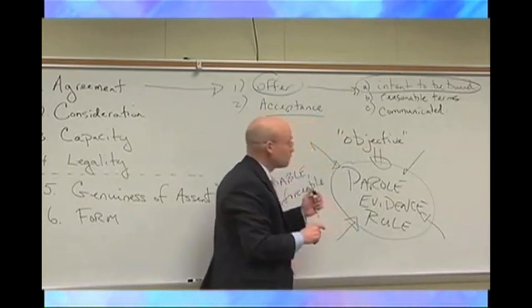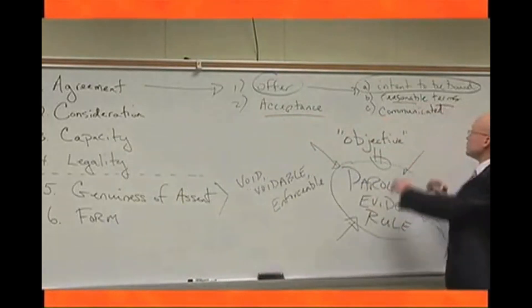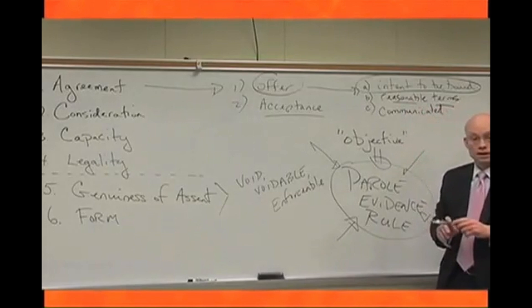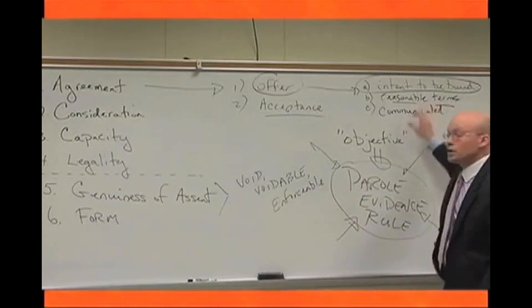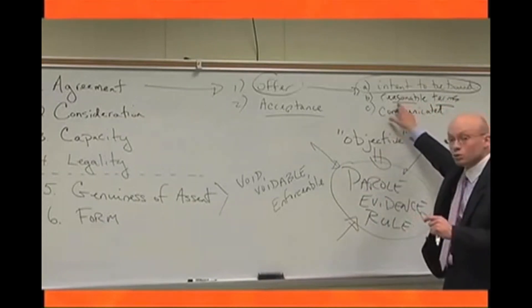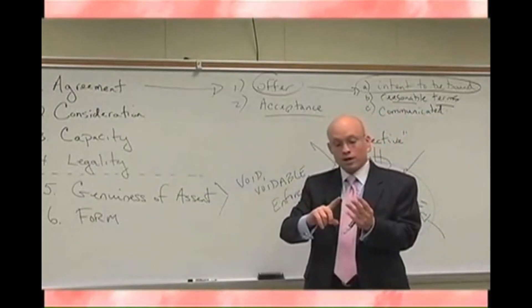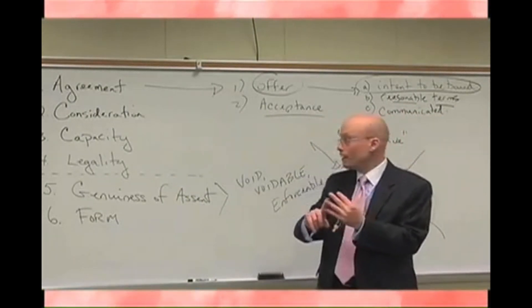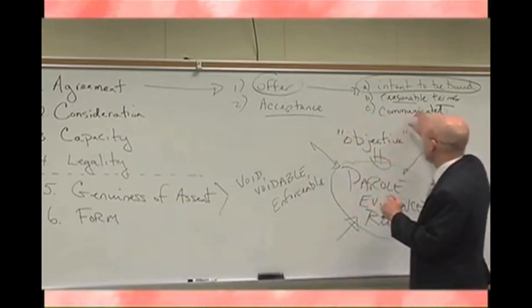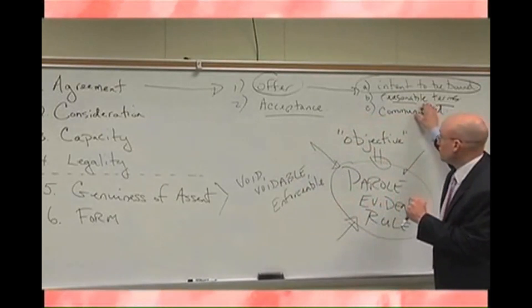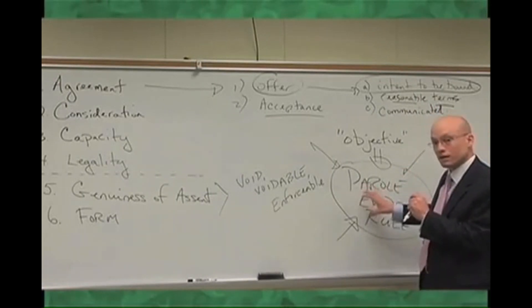However, there are some exceptions. One exception is to determine if a term is missing or ambiguous in a contract — you can determine what that term was through extrinsic evidence like prior conversations, emails, negotiations, or notes written during negotiations. So you would be allowed to figure out what that term is. Keep in mind there are exceptions to the Parol Evidence Rule, but it's there to protect the sanctity of contracts.